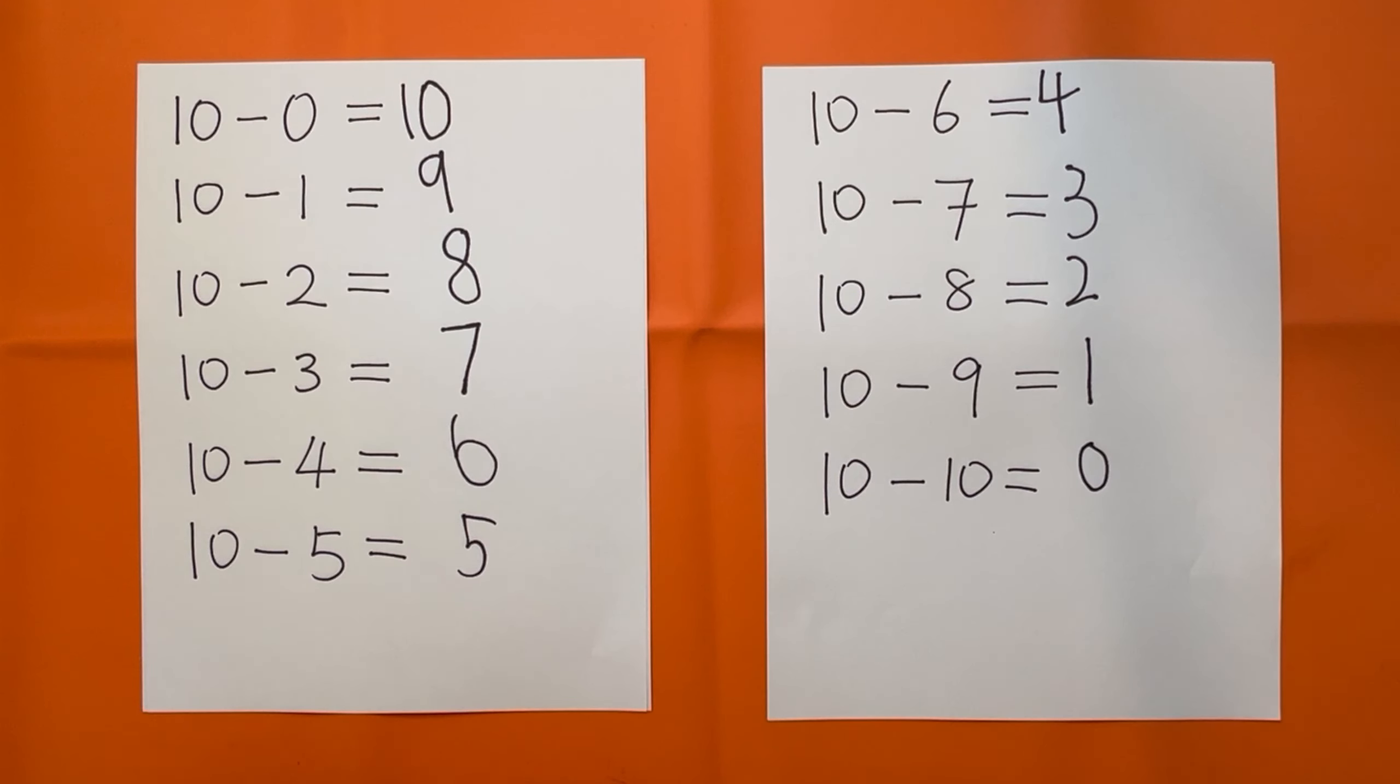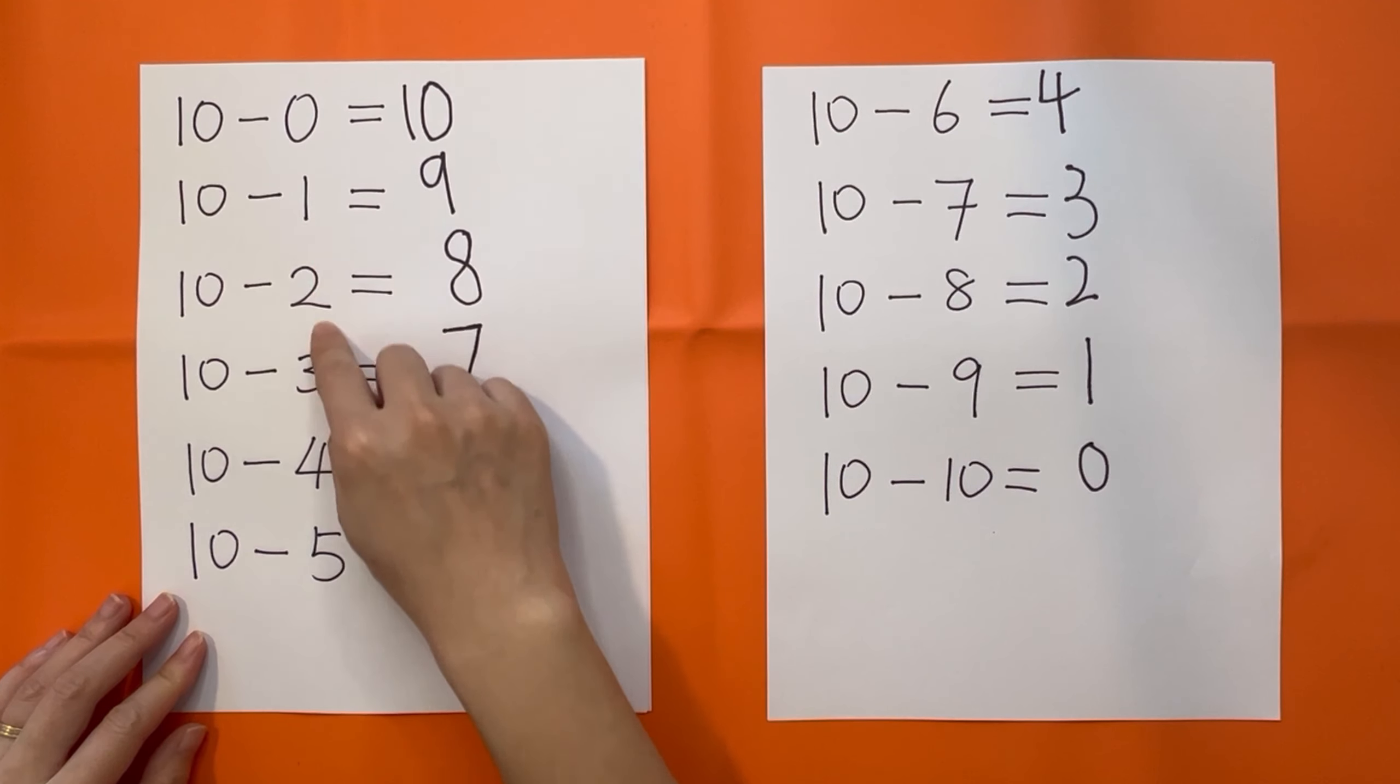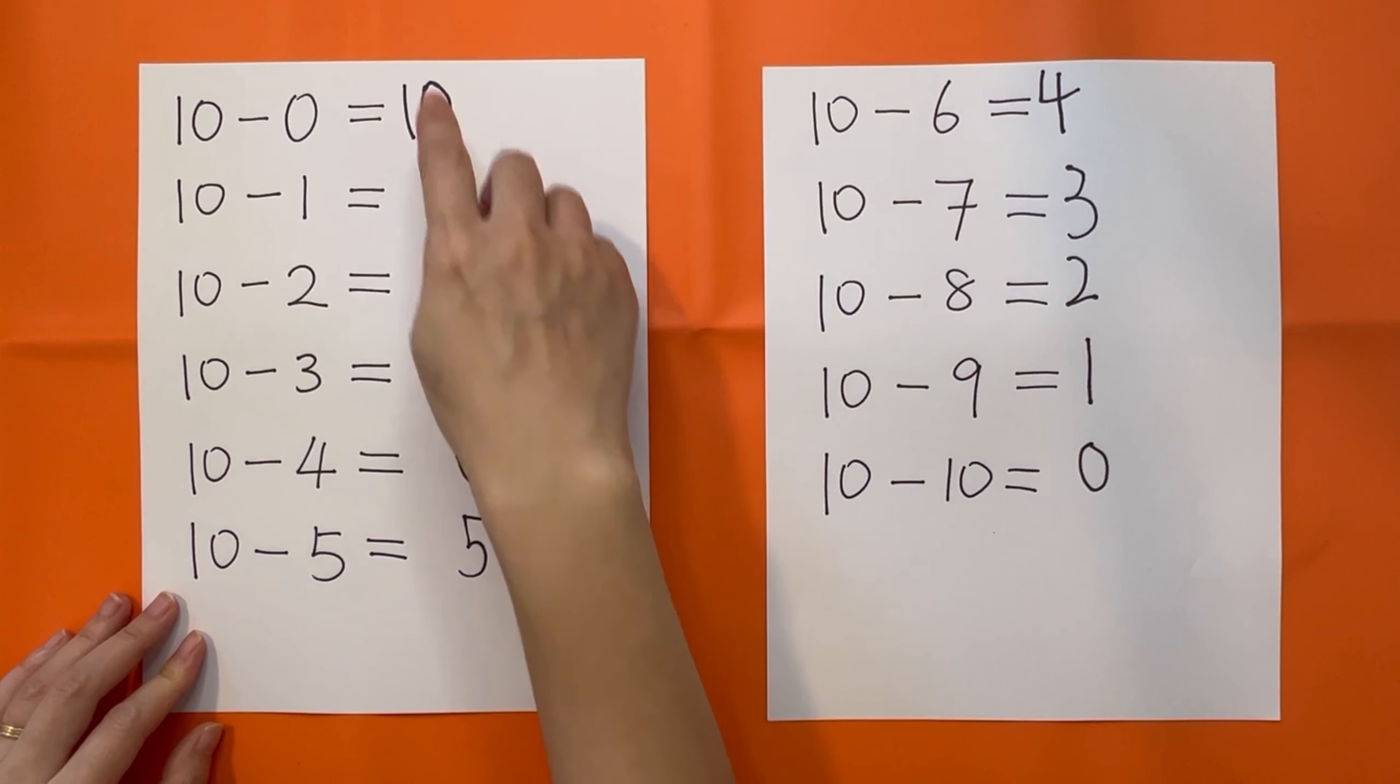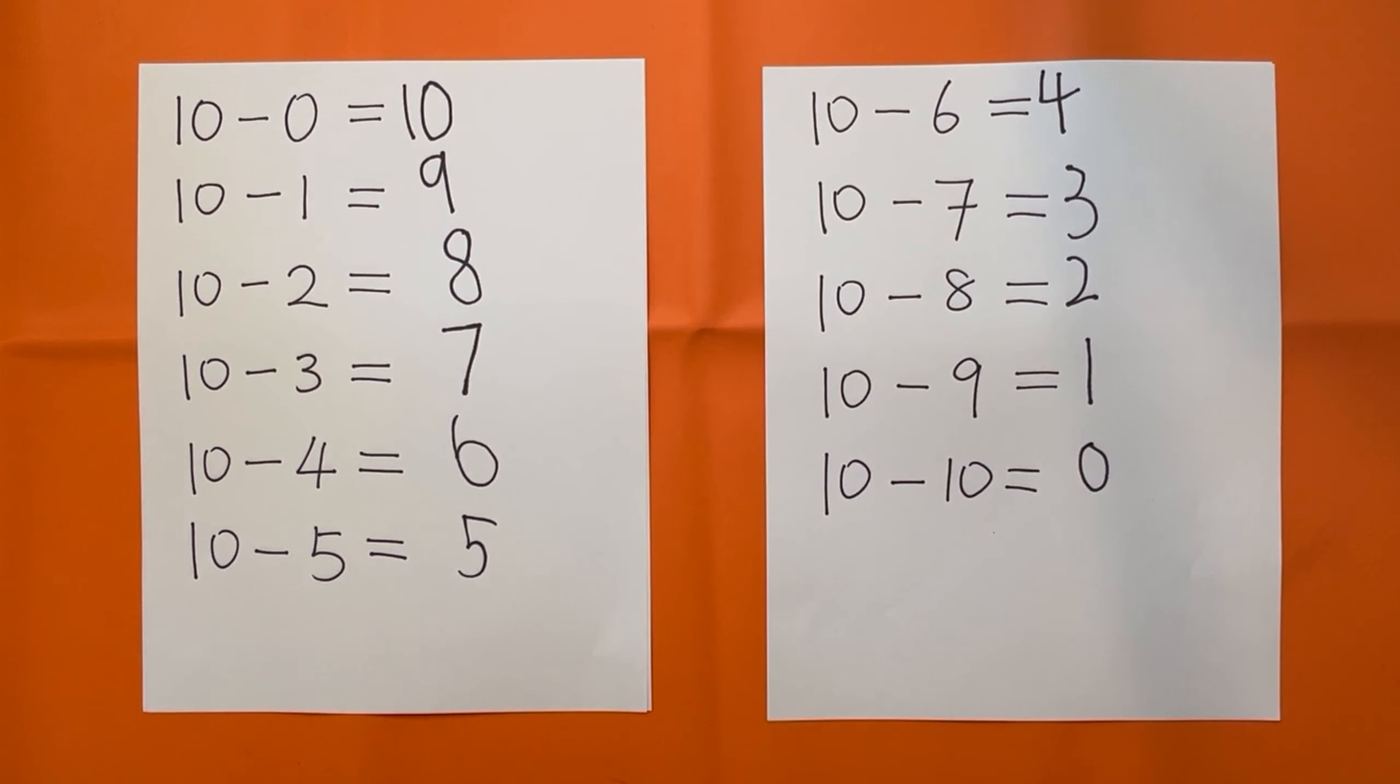So from 10 minus one digit we can see when the minus number is increasing from 0, 1, 2 until 10, the answer is decreasing from 10, 9, 8 until 0. That's it for today. If you like our video, please subscribe our channel.